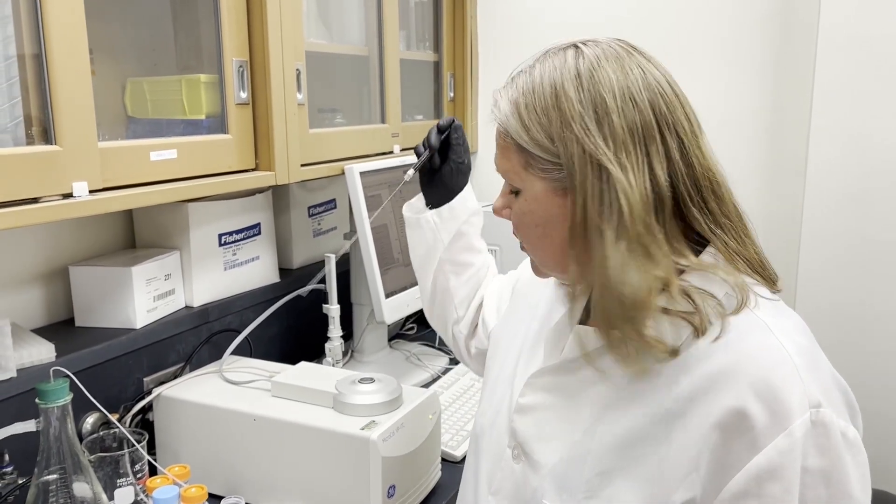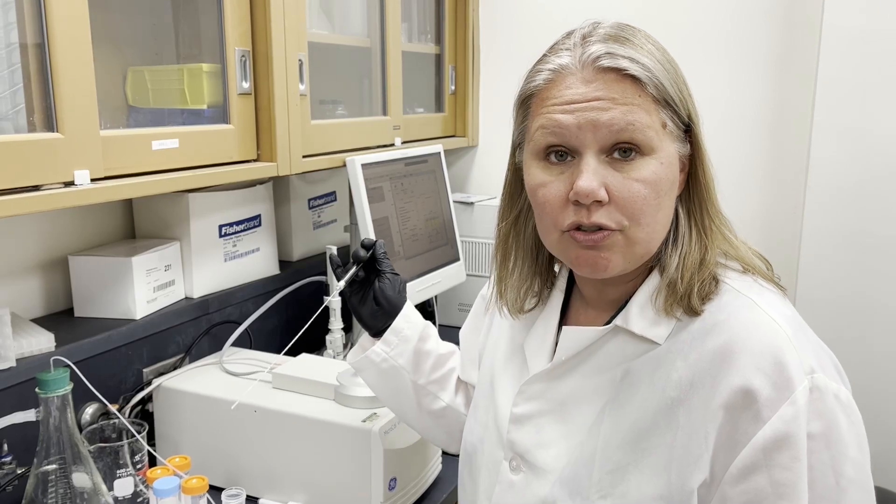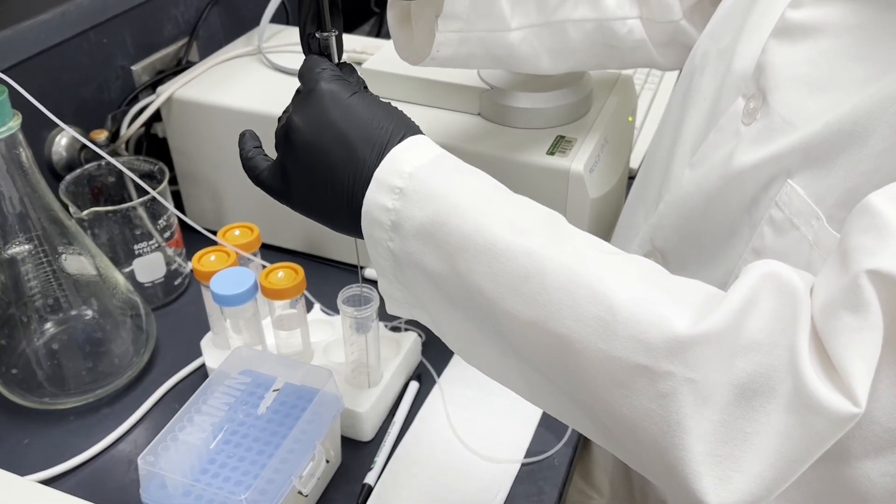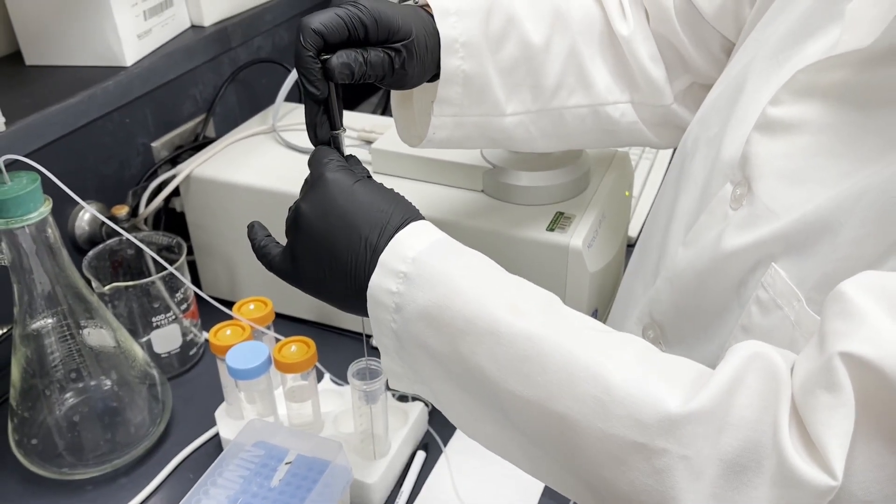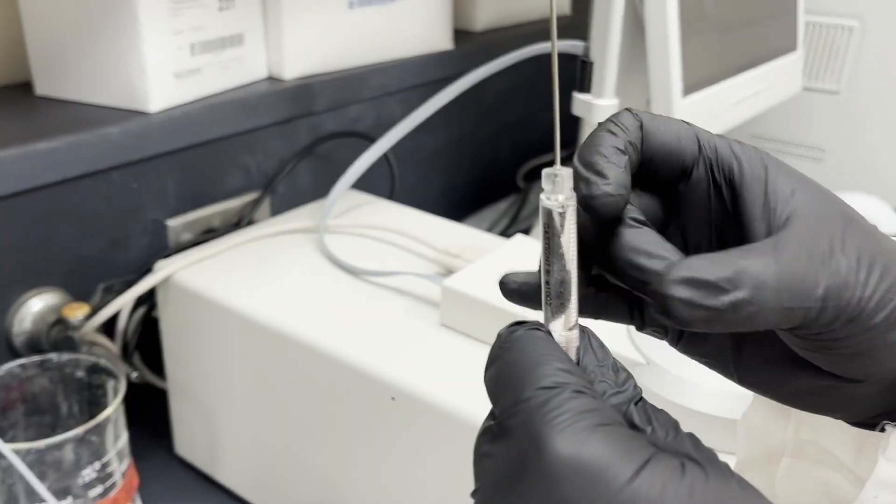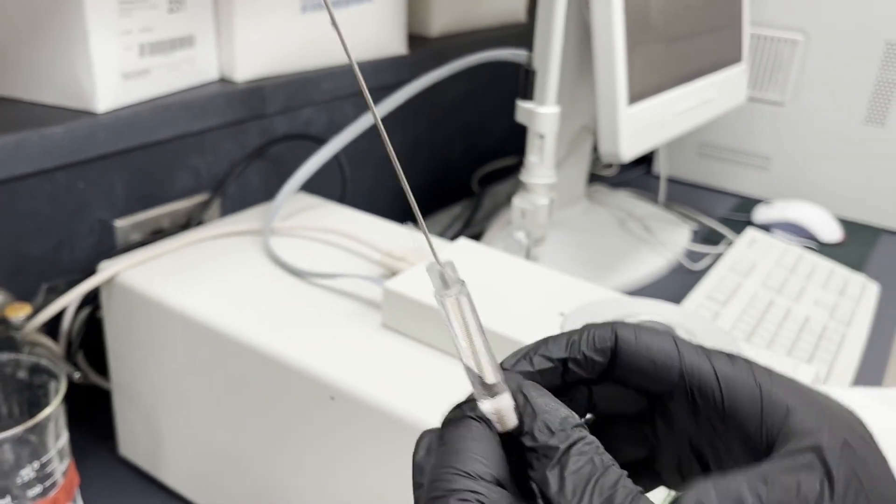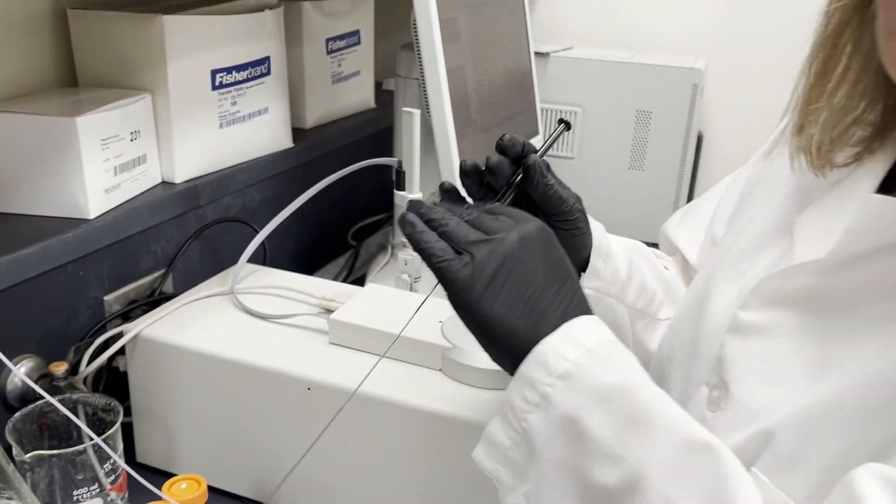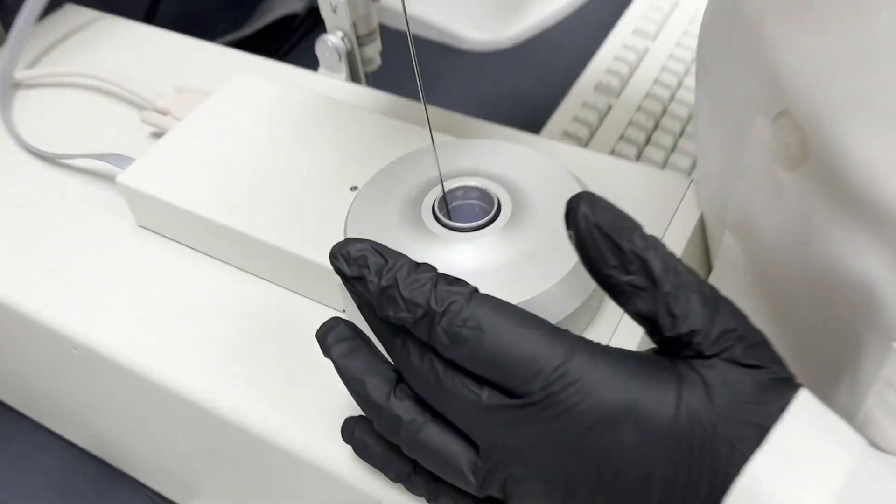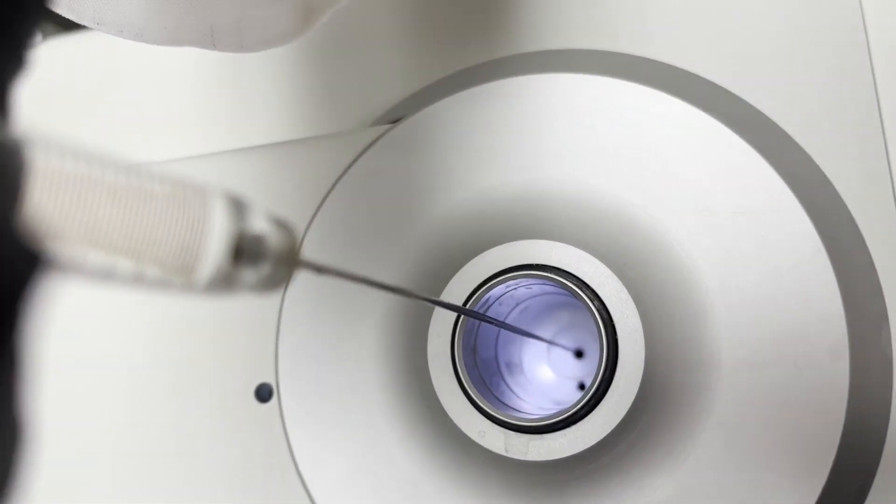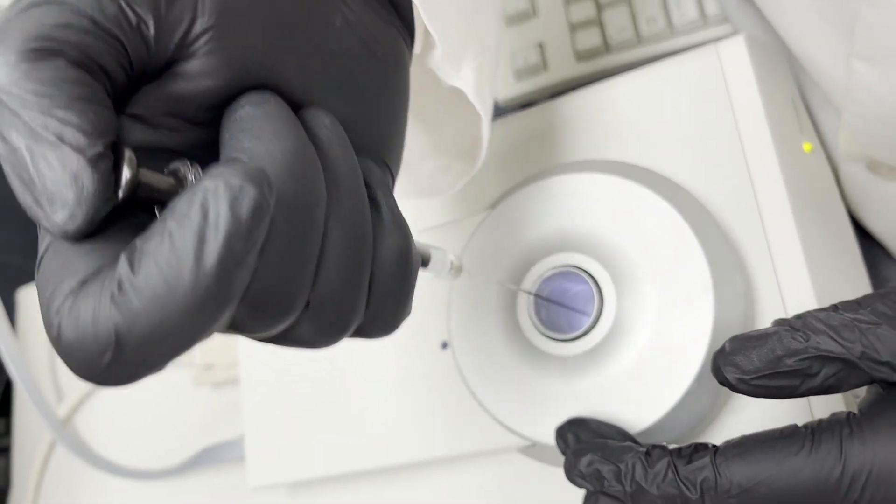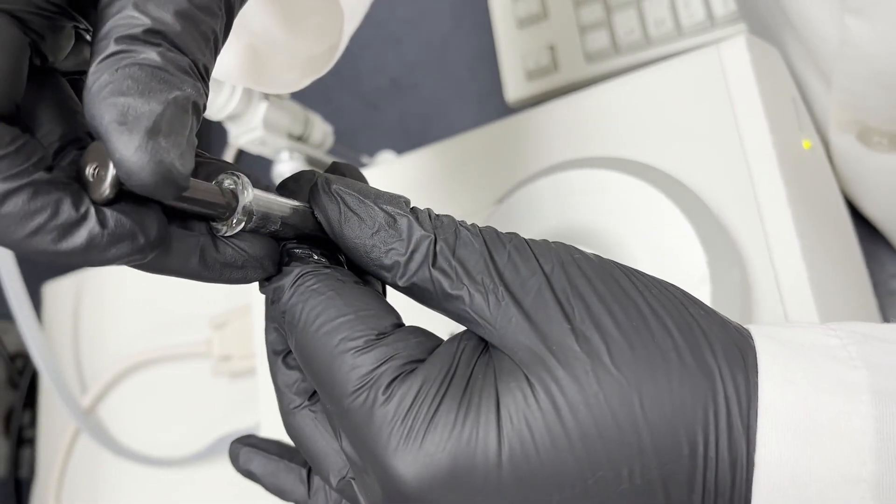While your sample is degassing, you also want to rinse out the sample cell and the injection syringe with your buffer of choice. Again I'm just using water, but pretend this is your buffer. Another thing that ITC does not like are bubbles, so you want to try and get all of them out of the Hamilton syringe. To rinse this out, you just simply inject it slowly into the sample cell and then remove it.